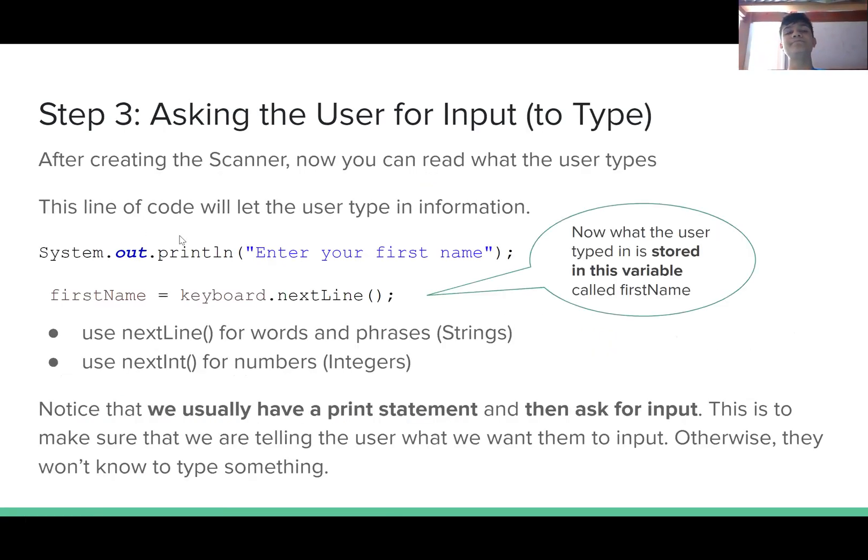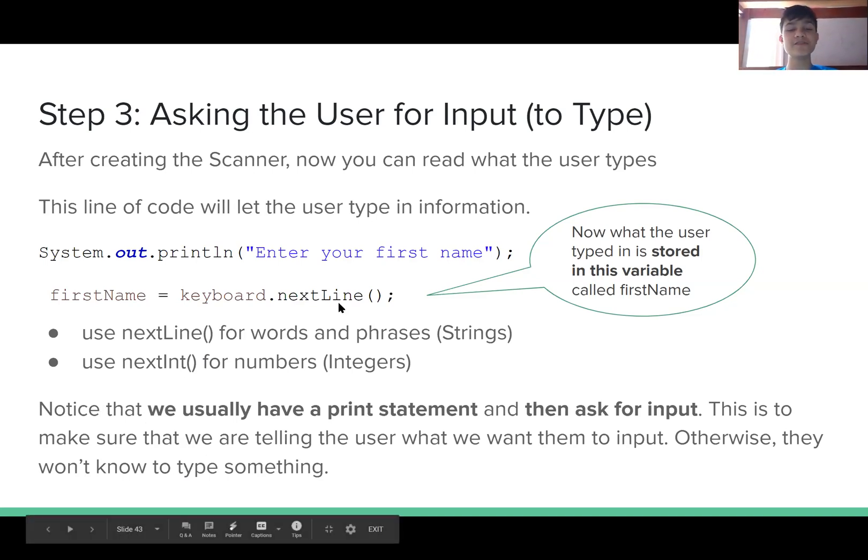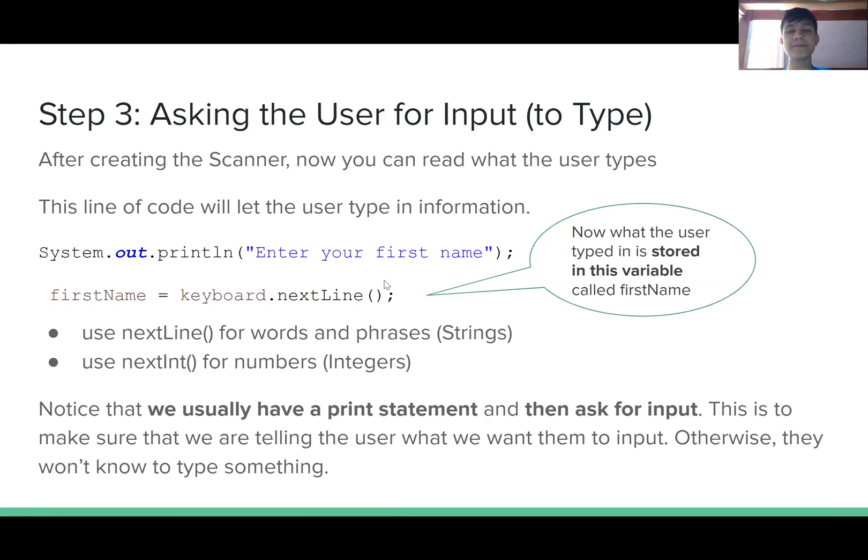Step three, asking the user for input. After creating the scanner statement, now you can read what the user types. This line of code will help the user type in information: firstName equals keyboard.nextLine. You may notice that there's a print statement at the top, but this print statement serves to let the user know that they need to type something in. You use nextLine for words and phrases or strings and use nextInt for numbers. Notice that we usually have a print statement and then ask for input. This is to make sure that we are telling the user what we want them to input. Otherwise, they won't know to type something and the rest of your code won't run until they enter something.